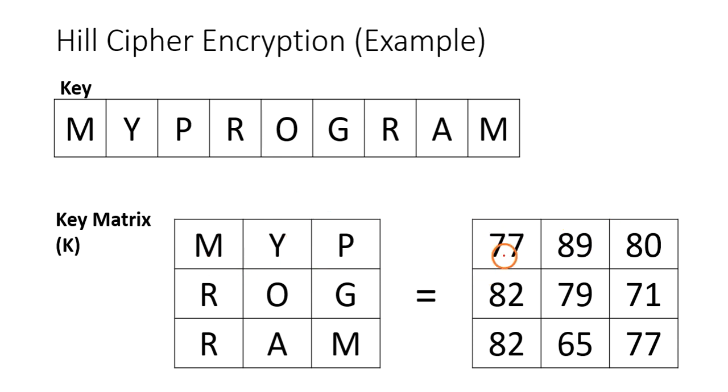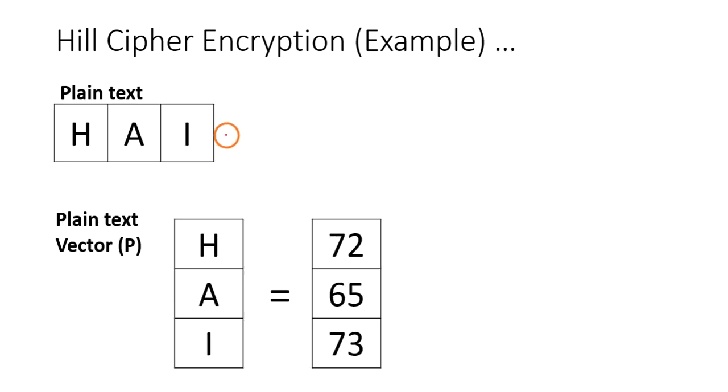Similarly, the plaintext is converted into a vector format. This is a single column vector. As the key matrix is taken, the ASCII values for each character for plaintext vector is also represented like this.